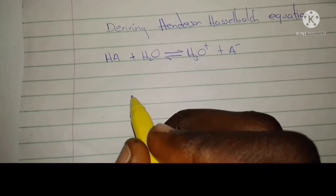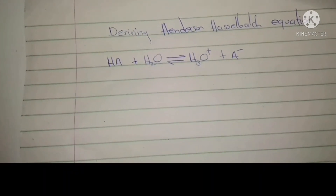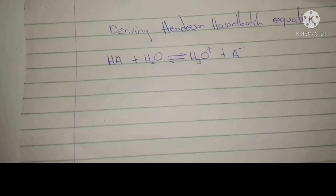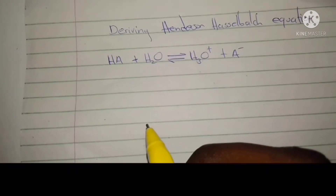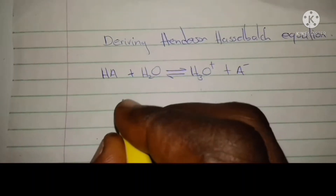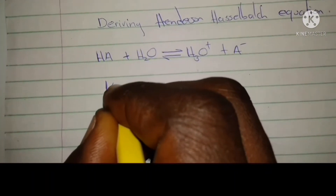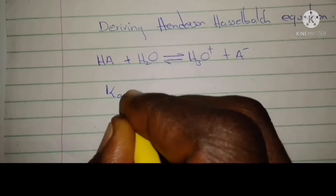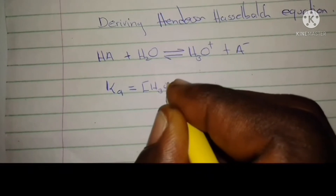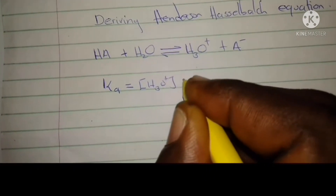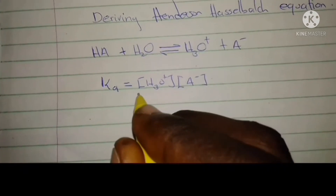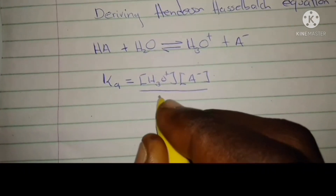We begin by deriving the Henderson-Hasselbalch equation. Given a hypothetical equation where HA dissociates in water to give a hydroxonium ion and a conjugate base A negative, we determine the dissociation constant Ka: Ka equals the concentration of the hydroxonium ion multiplied by the concentration of the conjugate base, divided by the concentration of the acid.